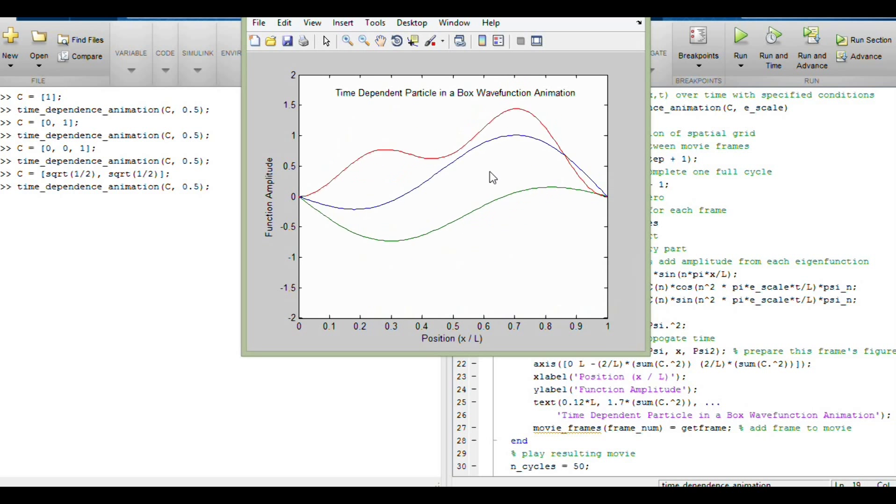And the expectation value for position is changing. It's moving to the left and to the right, so it has some momentum. So if you calculate the expectation value for momentum here, you're not going to get zero as you would for any individual eigenstate. And you'll notice that there is a nice period to this oscillation.